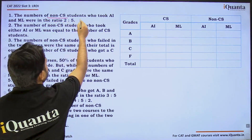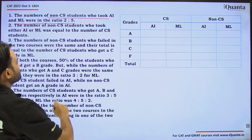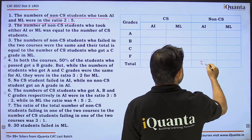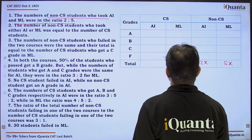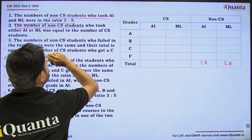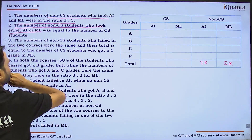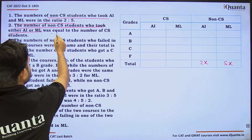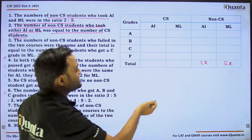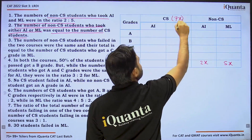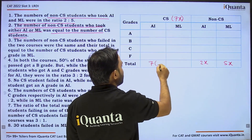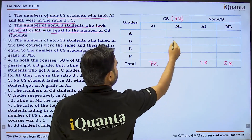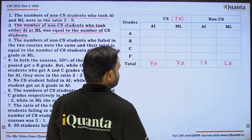The number of non-CS students who took AI and ML were in the ratio of 2:5. So if non-CS AI students is 2x, non-CS ML students must be 5x. The total of non-CS students — 2x plus 5x equals 7x — was equal to the number of CS students. So total CS students is 7x. Since all CS students took both courses, total AI students from CS is 7x and ML students is also 7x.